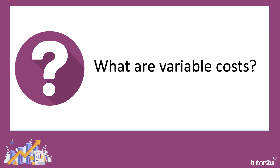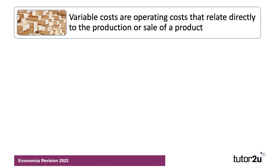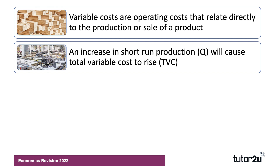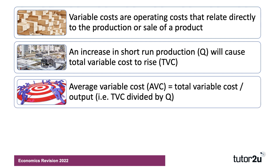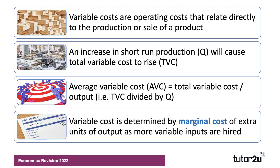So what are variable costs? They are operating costs of a business that relate directly, although not necessarily proportionally, to the production or sale of a product. So if a business is increasing its short-run production — increasing the level of output or Q — that will normally cause total variable cost to rise. Average variable cost is the total variable cost divided by the level of output. Variable cost, crucially, is determined by the marginal cost of extra units of output as more variable units are hired.